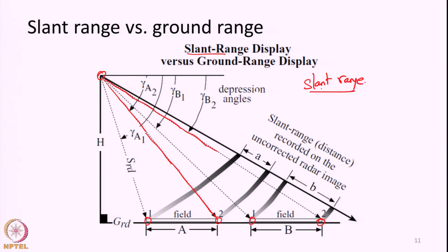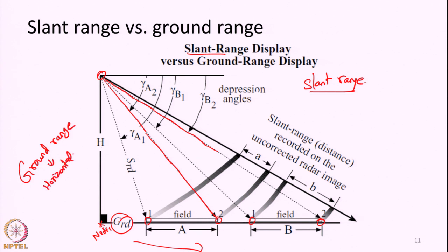Normally what we need for our applications is the distance of features from the radar acquisition system in a horizontal plane. From the nadir point, we are interested in measuring the horizontal distance of each feature on the earth surface — we call this the ground range. So the ground range is the horizontal distance of different features from the nadir point of the imaging radar system. But the radar will measure the slant range.